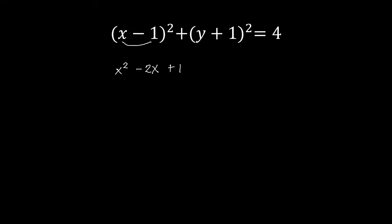Then we go to the second group: (y plus 1) squared. Doing the special product again, we square the first term — we get plus y squared. Then we multiply 2y times 1, that's y times 2, which will be plus 2y. Next, we square the last term: 1 squared equals 1. And that will be equal to 4.